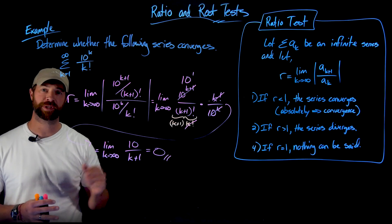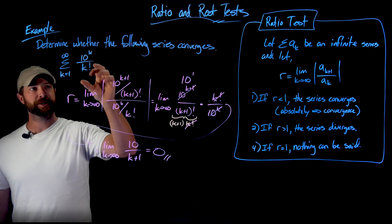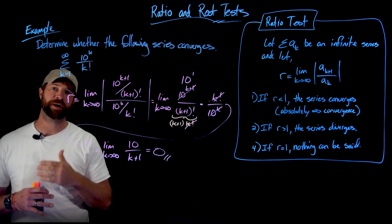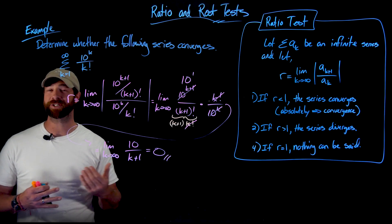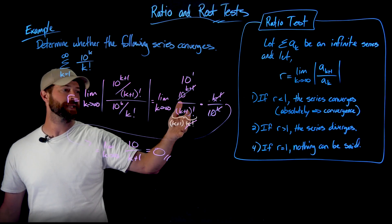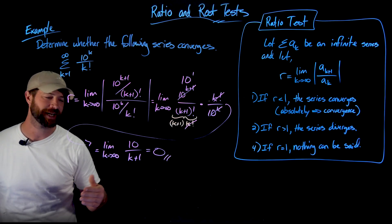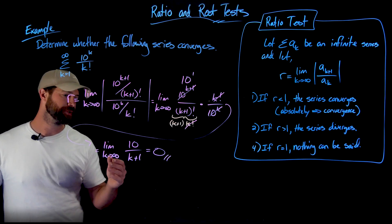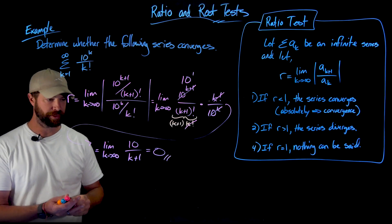Before finishing, I want to emphasize: if I had tried to use the integral test on this expression, integrals and factorials don't play nicely — that would be very difficult. But the beauty of the ratio test is this beautiful canceling: after applying it, I have no more factorials left, no more exponential factors, and I can easily apply the limit. Applying the limit as k goes to infinity of 10 over k plus one — constant over variable — this limit goes to zero. So r equals zero, which is less than one, and the series converges.